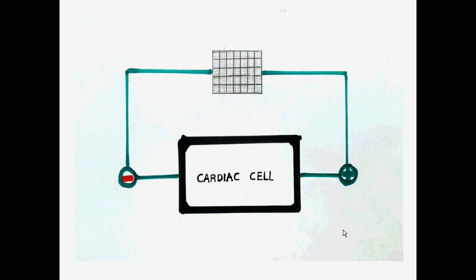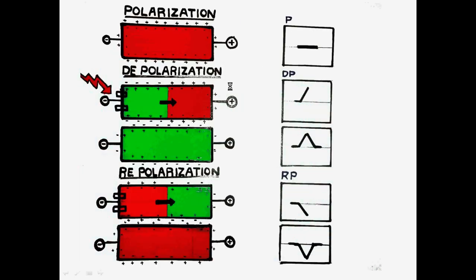Under basic principles we have five concepts: polarization, depolarization, repolarization, directionality, and magnitude. We're going to learn all these using a single cardiac cell. Assume what you see here is a cardiac cell. We connect one end to the positive terminal and another end to the negative terminal, and we'll see what is recorded on ECG. At rest, every cardiac cell is electronegative inside and relatively electropositive outside. At this stage the cell is said to be in a state of polarization.